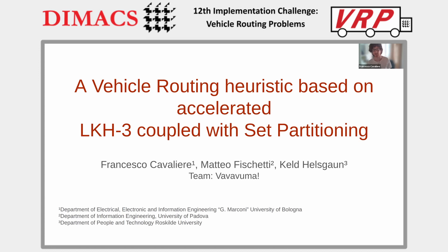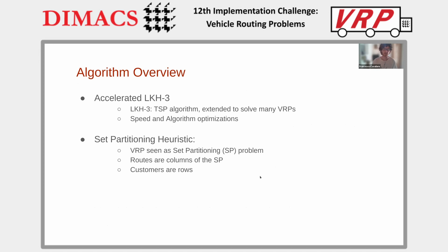The algorithm can be divided mainly into two phases. The most important one is represented by the heuristic by Calderion, AKH3, which in its third version is a TSP algorithm extended for many VRP variants. The second, minor part is the sub-partitioning phase, which we developed for solving the sub-partitioning instances obtained from the routes extracted from the solution of the first phase.